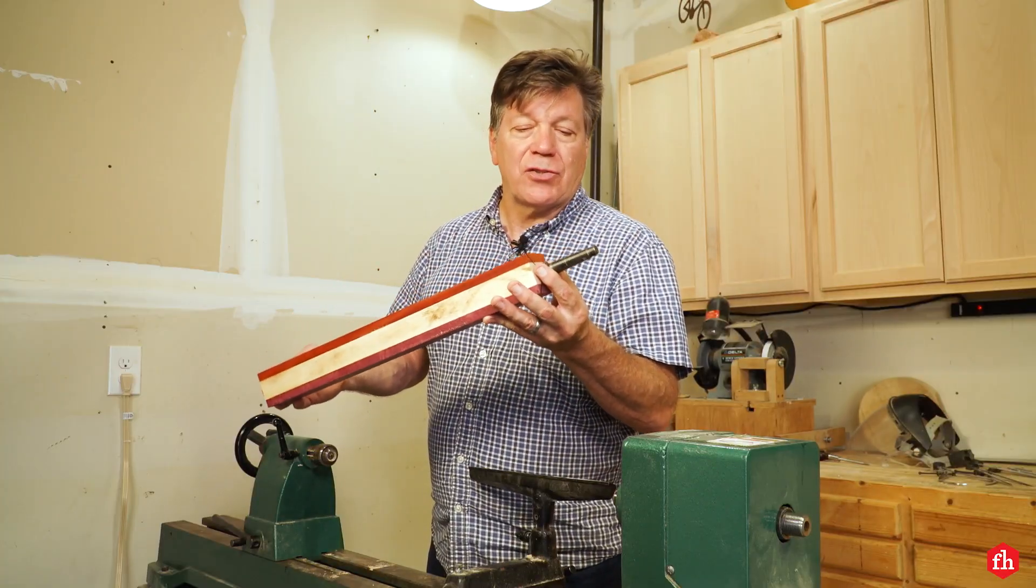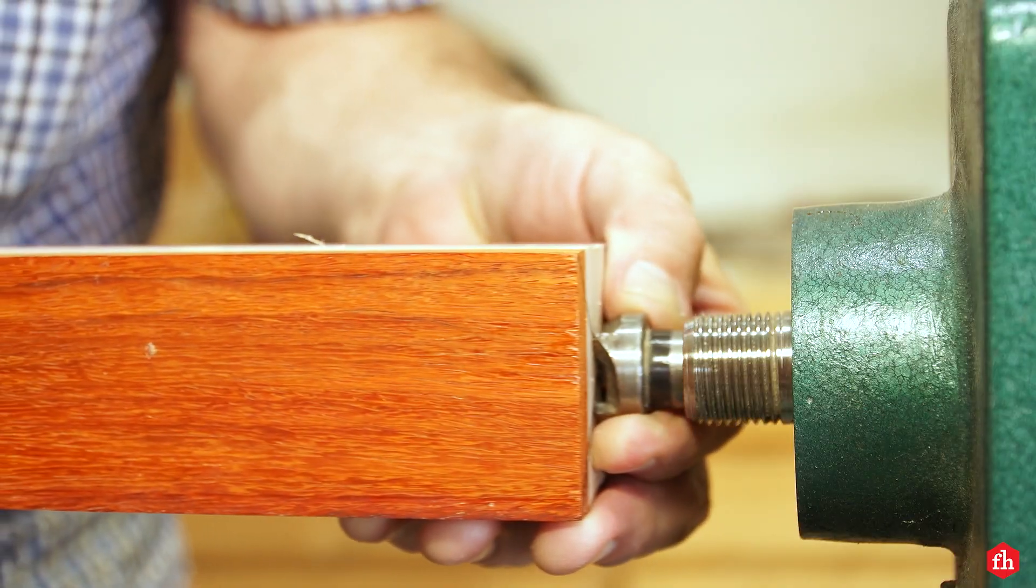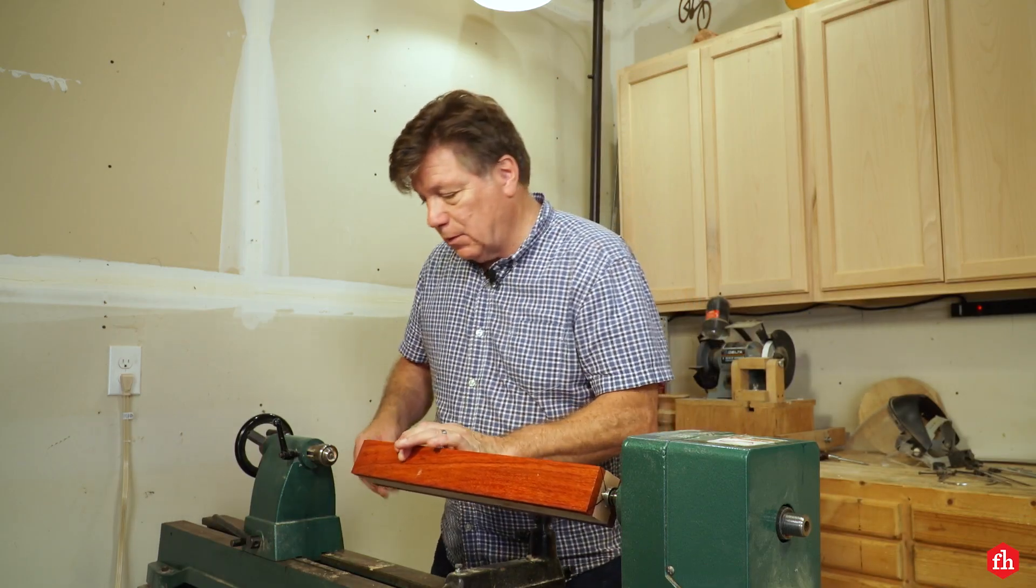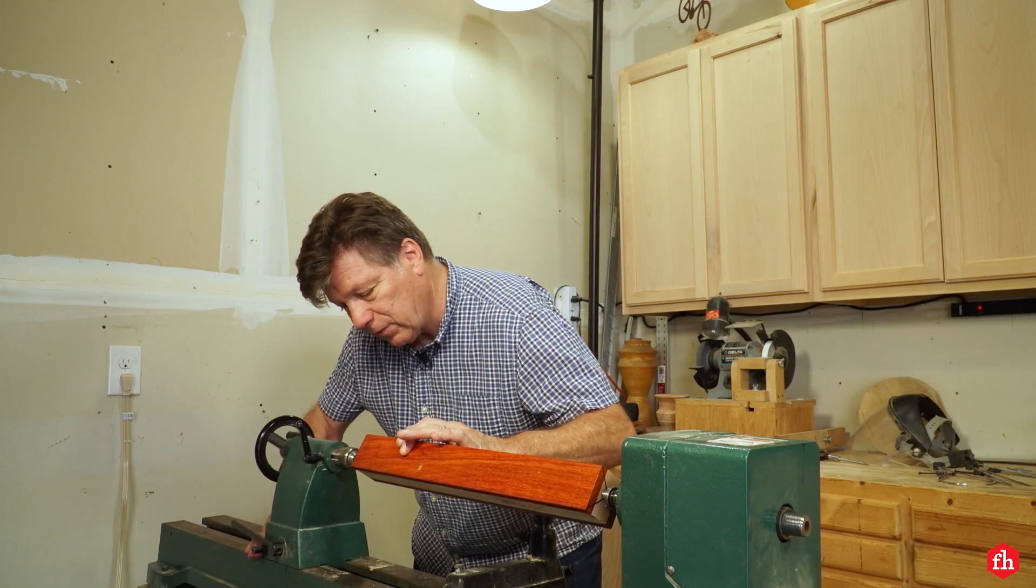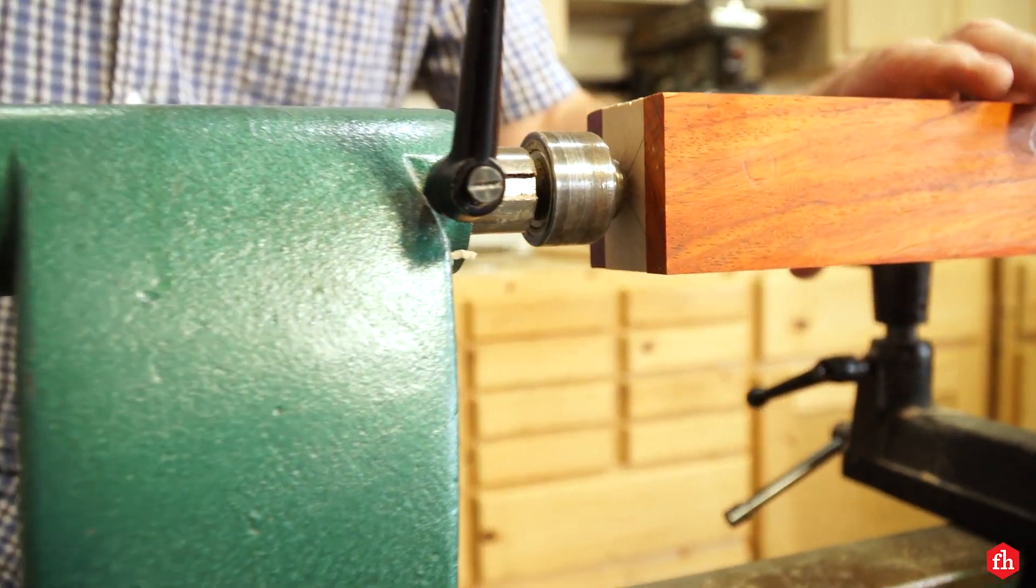Now that we have the spur chuck attached to the turning blank, just simply slip the spur chuck into the headstock spindle, slide the tail stock, so your live center attaches directly to the center of your turning blank.